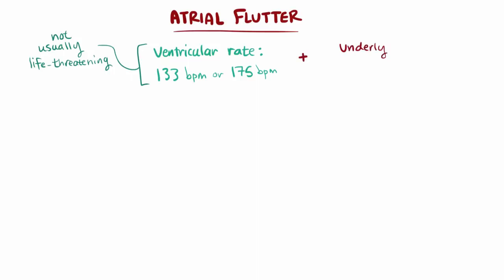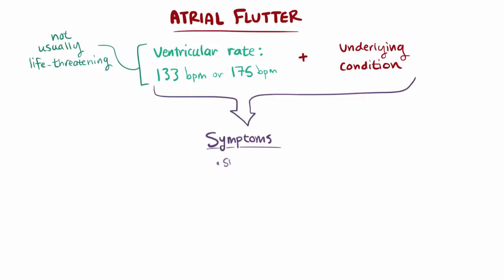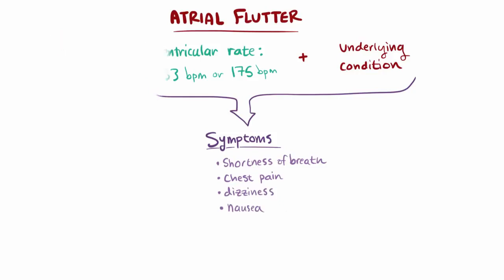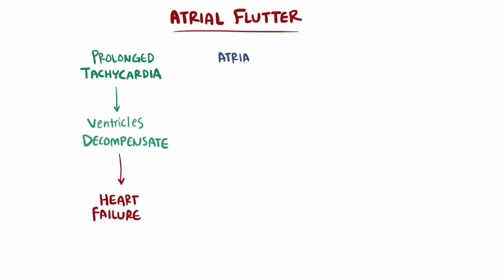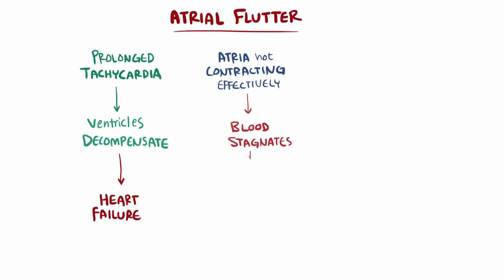If somebody has an underlying condition where they aren't able to physically tolerate high ventricular rates, they might feel symptoms like shortness of breath, chest pain, dizziness, and nausea. Over time, from prolonged episodes of tachycardia, the ventricles can tire out and decompensate, and people can develop heart failure. Also, since the atria aren't contracting very effectively, blood tends to stagnate or pool in the atrium, and this can lead to formation of blood clots that can embolize to the brain and cause a stroke.